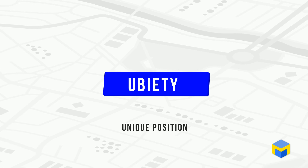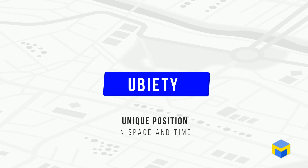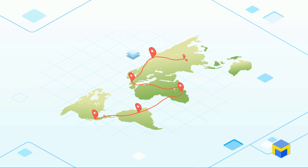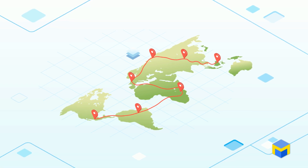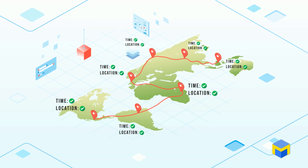Ubiety is a unique position in space and time. For a Trip to be trusted, it is required that a roaming entity's verified decentralized ID is linked with its location in space over time, along with a minimum set of industry accepted proofs to ensure that the Trip's data can be trusted.